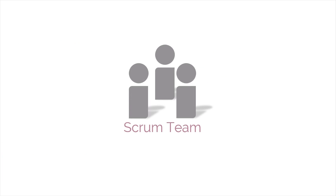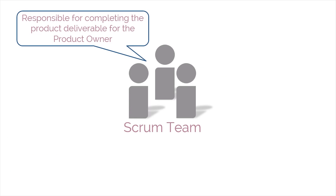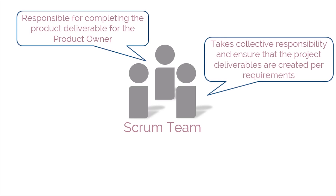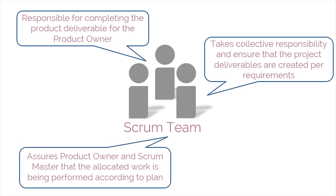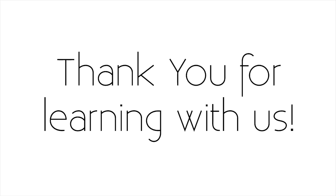Last, we're going to talk about the Scrum team. In simple terms, the team is responsible for completing the product deliverables for the product owner. The team takes collective responsibility and ensures that the product deliverables are created per requirements. It also assures the product owner and Scrum Master that the allocated work is being performed according to plan. Thank you for learning with us.